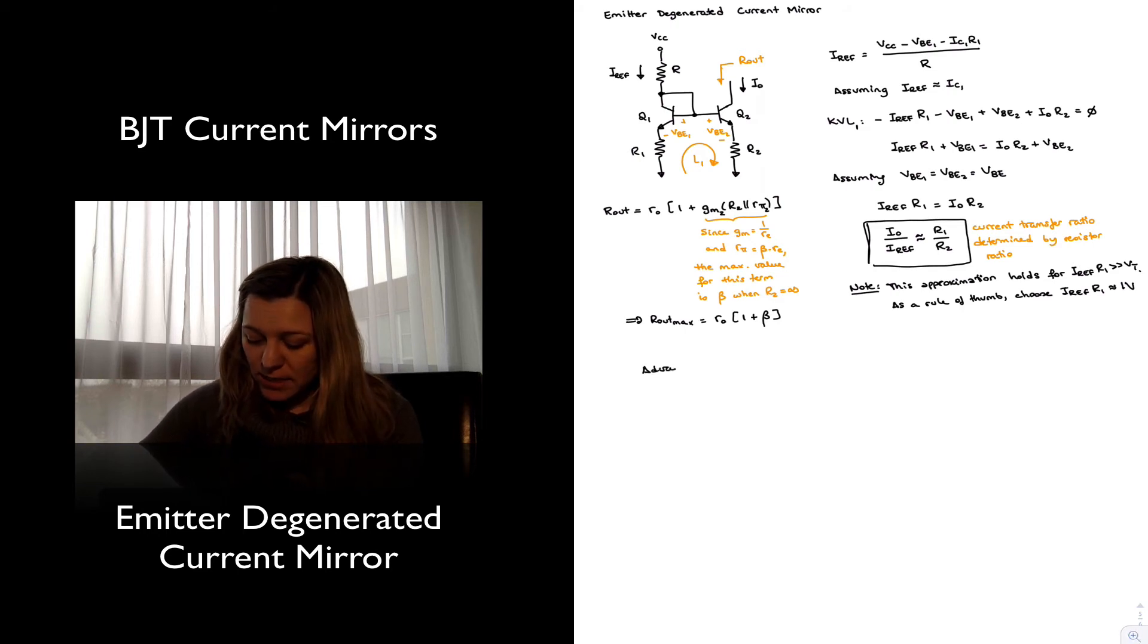The advantages in this case, with respect to the basic mirror, will be increased temperature stability. And the reason for that is because resistors have a lower temperature coefficient than VBE. And so in the case of the basic current mirror, we were relying more on the thermal matching of the two transistors, so that the VBEs could be assumed to be equal.